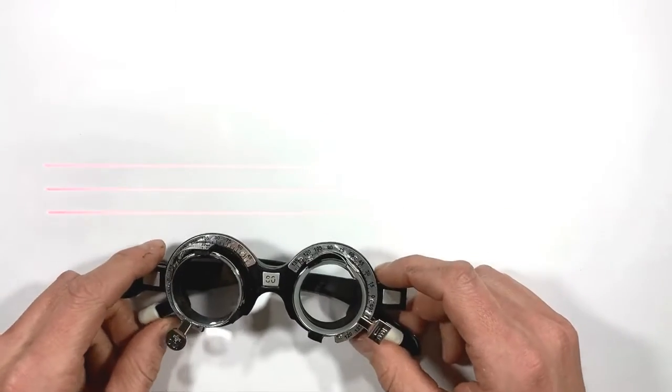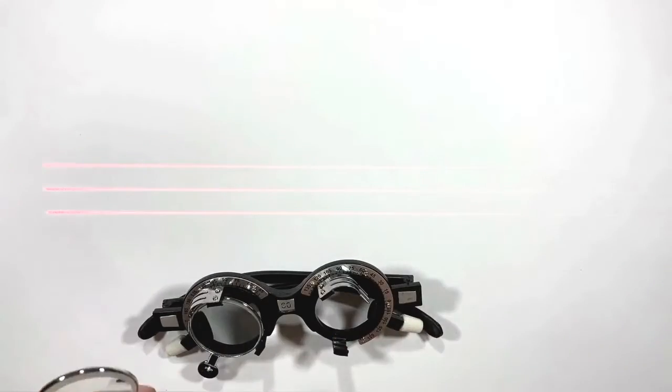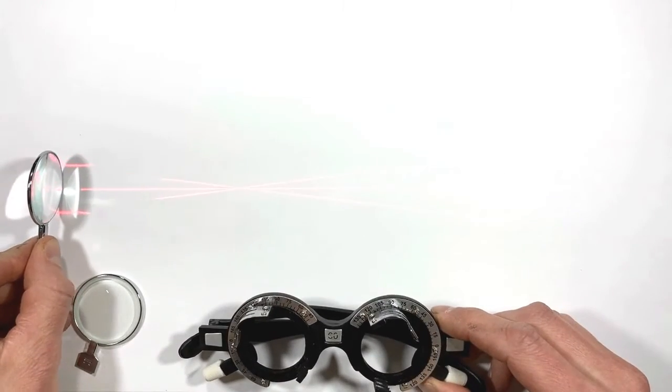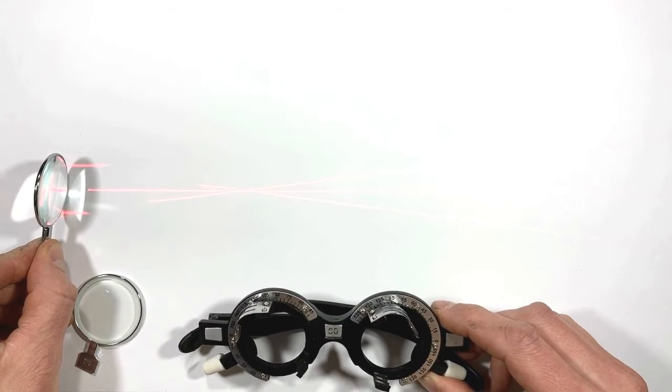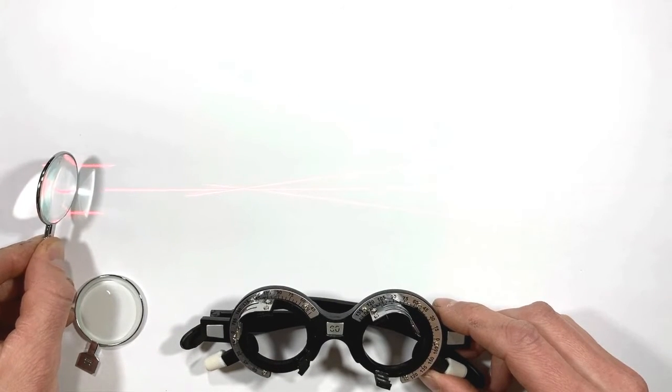And just what is going on when your optometrist starts flipping lenses in front of your eyes asking you if something looks better or worse? These questions can be explained with one physical principle: the bending of light rays in a process called refraction.